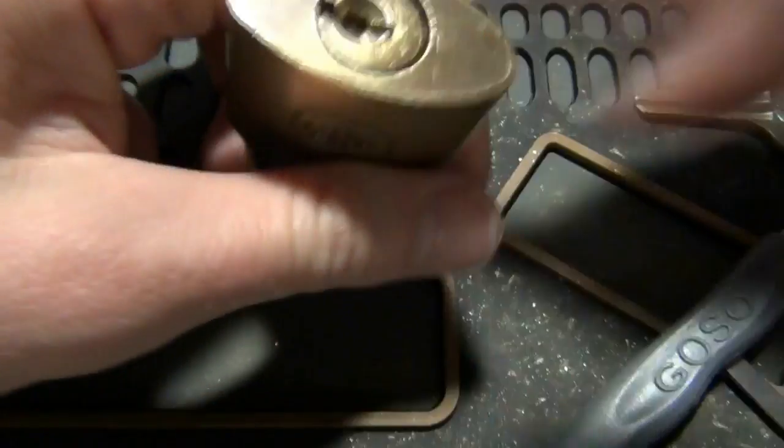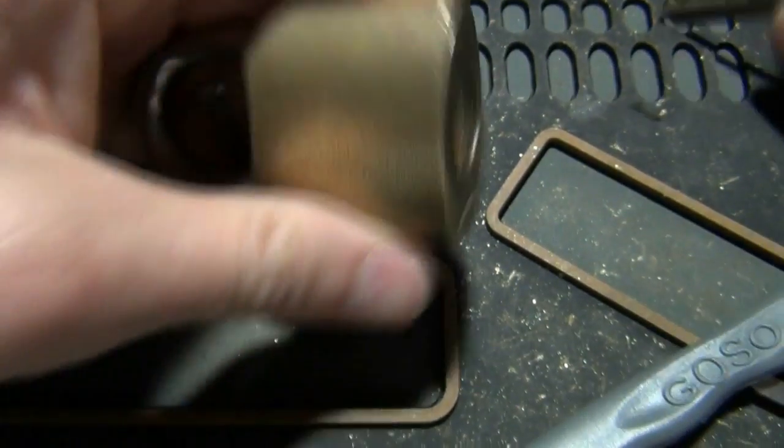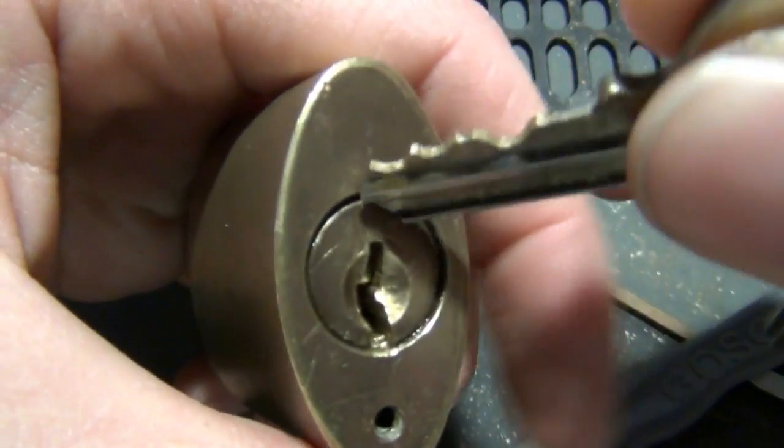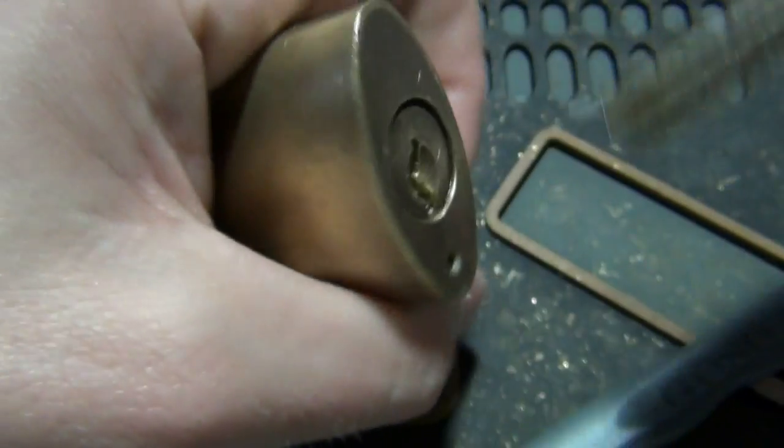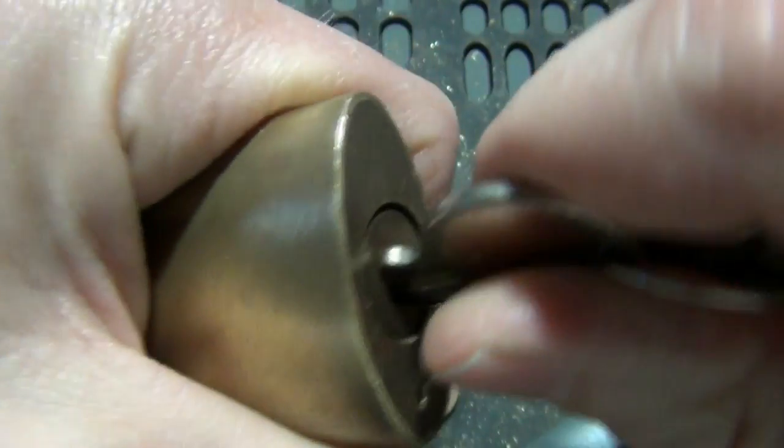All right, so in this video I've got a Wilson Bohannon brass padlock here with the key. It's got pretty good spring tension on the actuator here.